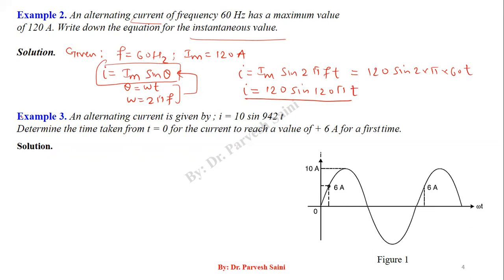The third numerical: an alternating current is given by i = 10 sin(942t). We have to determine the time taken by the current to reach +6 ampere for the first time from t = 0. The peak value of the signal is 10 ampere. Since we need +6 ampere, this is in the positive half cycle.